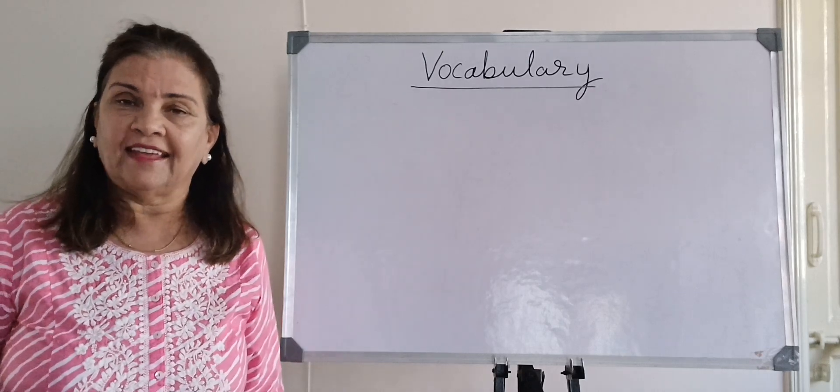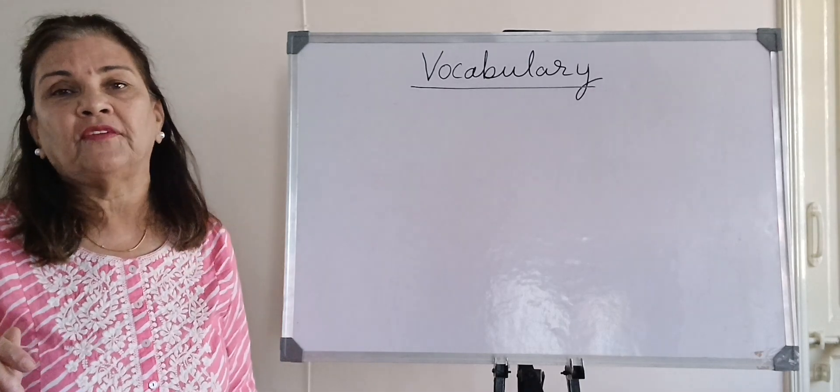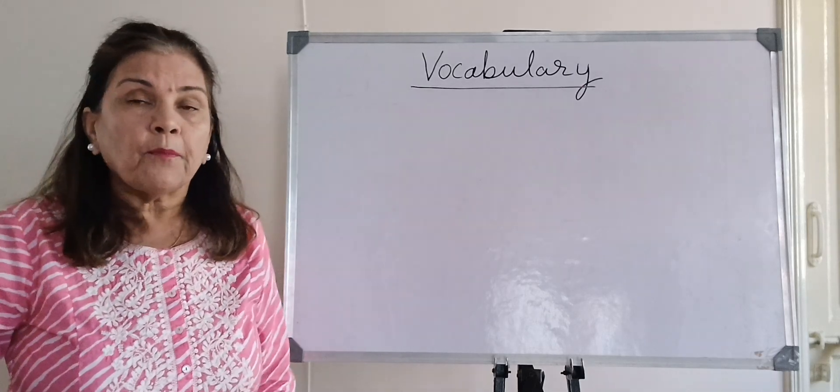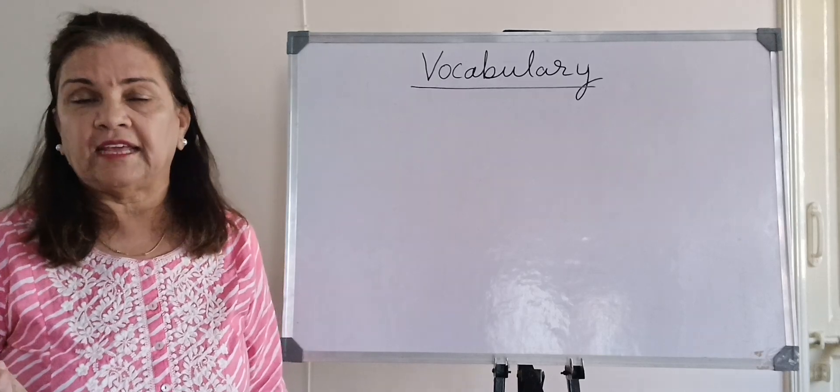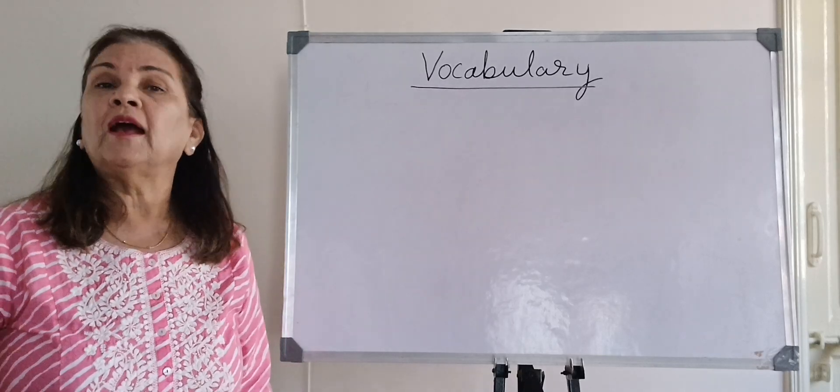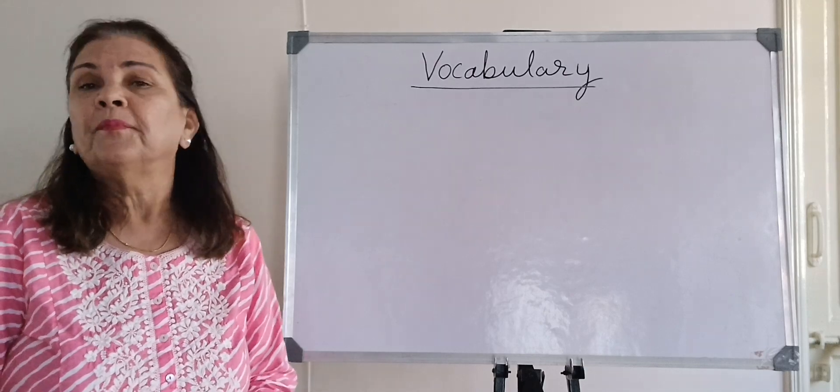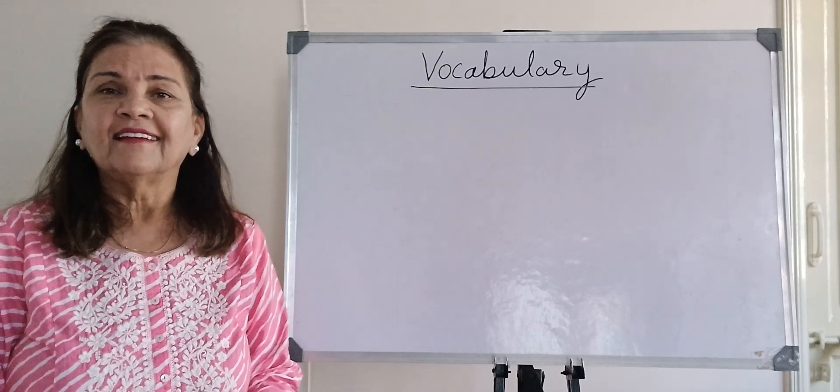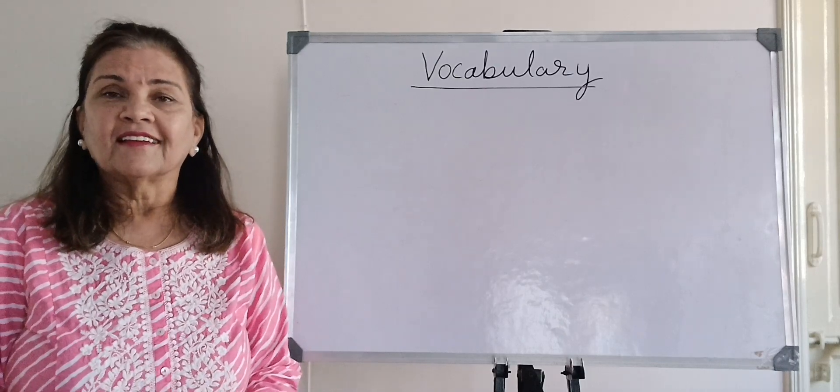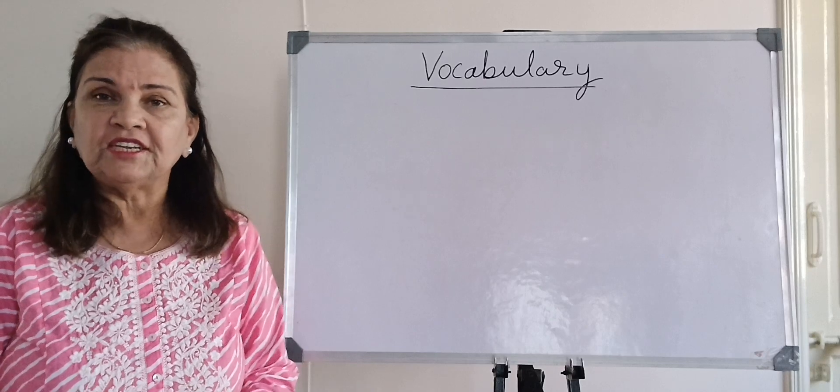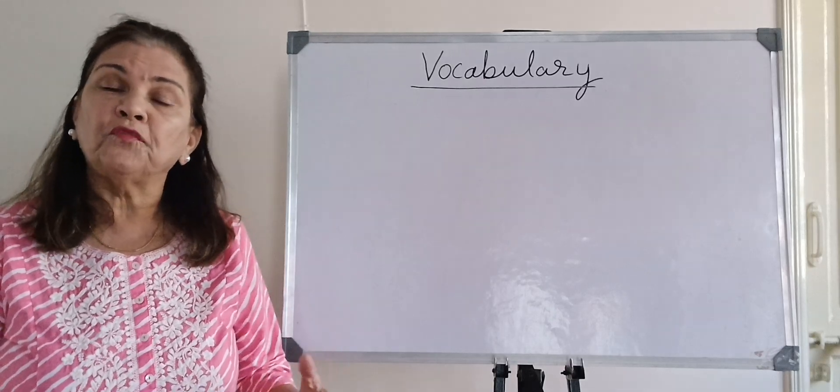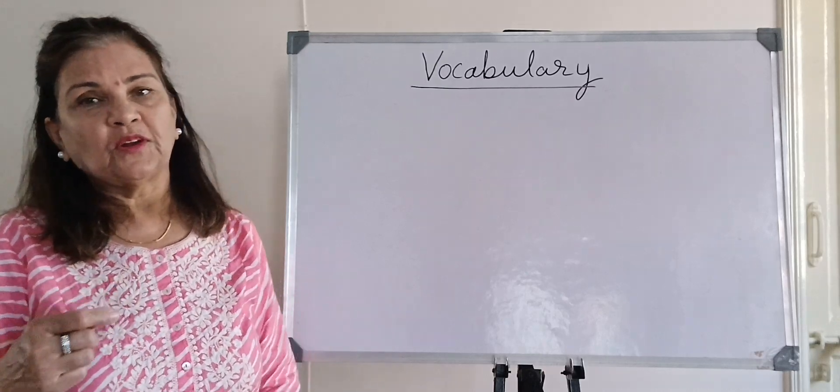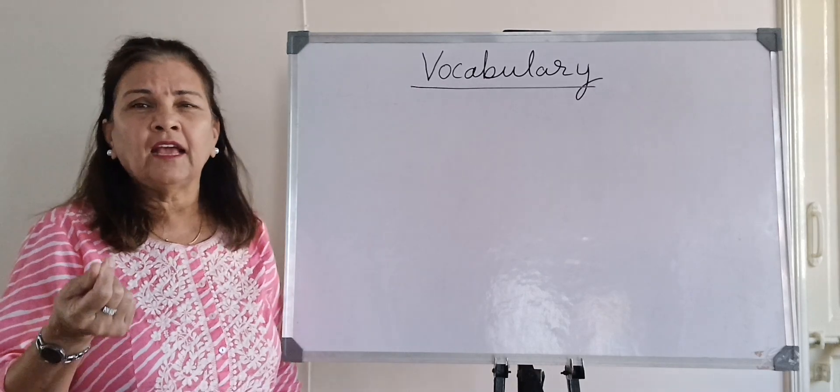So you should start your thesaurus activity. Take any one word and find as many substitutes as you can and then see in which situation we use which word. Suppose I take a word, beautiful - simple word. Okay, pretty, good-looking, handsome, gorgeous - extremely beautiful. Ravishing. So start your activities. Every day, one word.